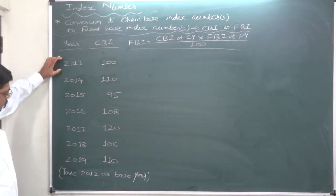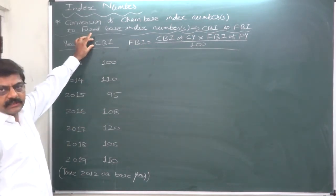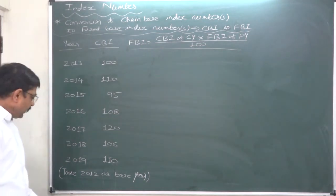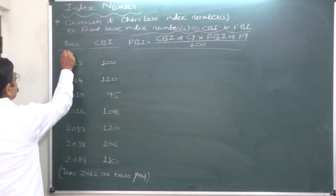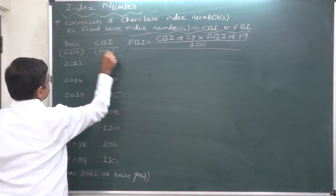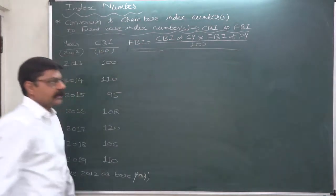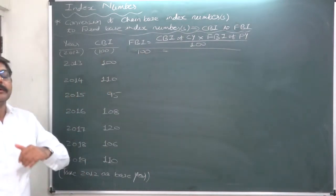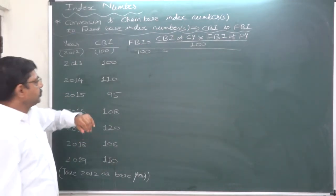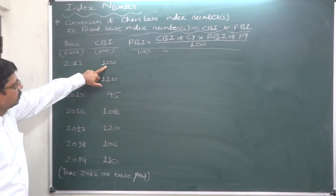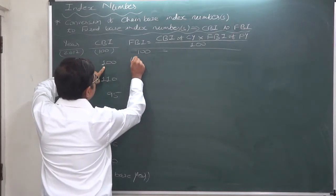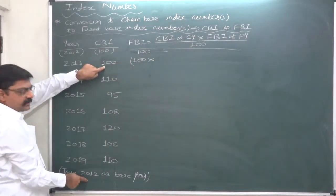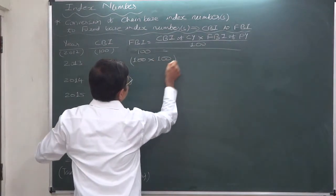We have a time series from 2013 to 2019, and the chain base index numbers of all these years have already been given. We need to convert all these CBIs to fixed base index numbers. We have been told to take 2012 as the base year, so the index number for 2012 is 100. For 2013, the chain base index number is 100, multiplied by the fixed base index number of the preceding year 2012, which is also 100, divided by 100.